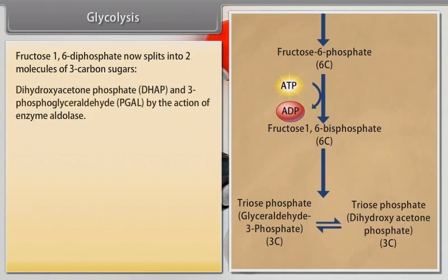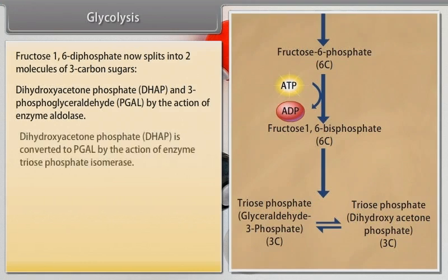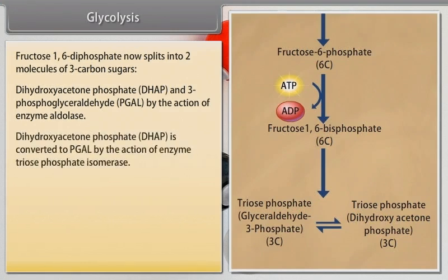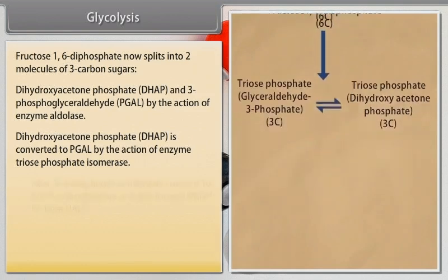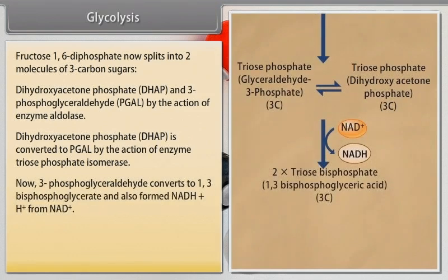Dihydroxyacetone phosphate (DHAP) and 3-phosphoglyceraldehyde (PGAL) are formed by the action of enzyme aldolase. Dihydroxyacetone phosphate (DHAP) is converted to PGAL by the action of enzyme triosephosphate isomerase. Now, 3-phosphoglyceraldehyde converts to 1,3-biphosphoglycerate and also forms NADH + H⁺ from NAD⁺.